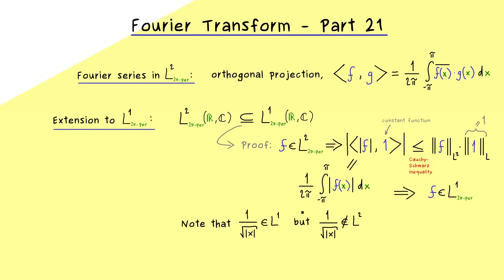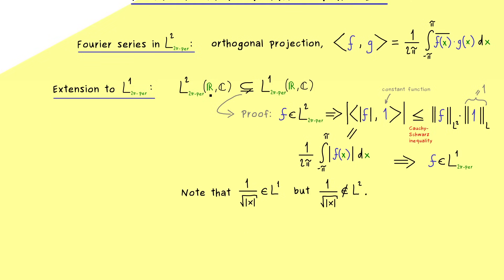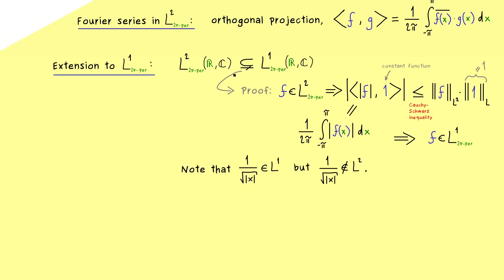However if we square this function we have 1 over x which is not integrable at all. So in summary this is a function which is integrable but not square integrable. So if you want we can also omit the equality here in the subset relation. So we definitely have an extension here because the space L1 is bigger.